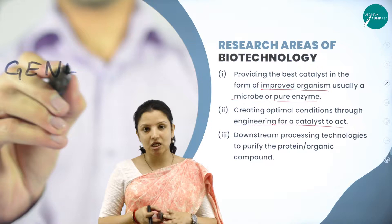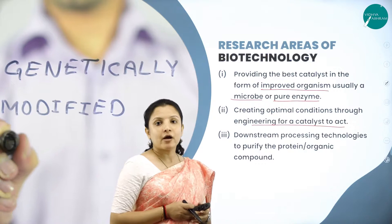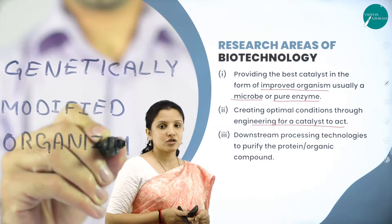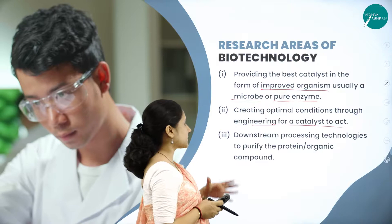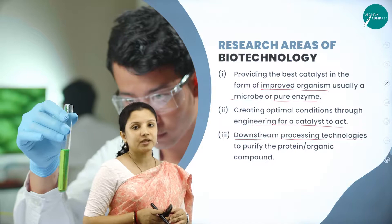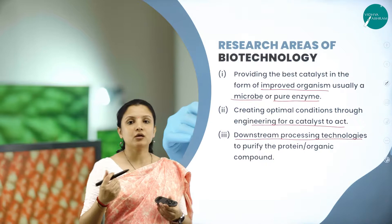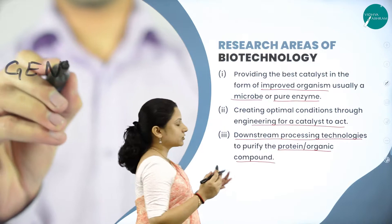Biotechnology also creates optimal conditions through engineering for a catalyst to act. We all know about one of the branches in biotechnology — genetic engineering — wherein the genes are manipulated in order to produce a product, an organism, or a crop of our particular interest. For that, an optimal condition is needed, wherein proper chemicals and proper temperature are provided by biotechnology. In biotechnology, there is a process called downstream processing technology.